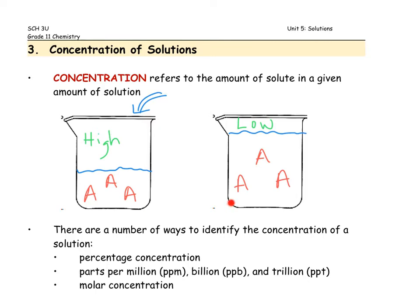A highly concentrated solution is one where there is lots of solute relative to the amount of solvent, whereas a solution with low concentration is one where there's a relatively large amount of solvent relative to the amount of solute in solution. In chemistry, when we're writing concentration, a short form is to put square brackets around the substance. So, for instance, when I put brackets around a substance, I'm really saying its concentration. For example, if I were describing the concentration of solute A in that solution, I might indicate it as such.